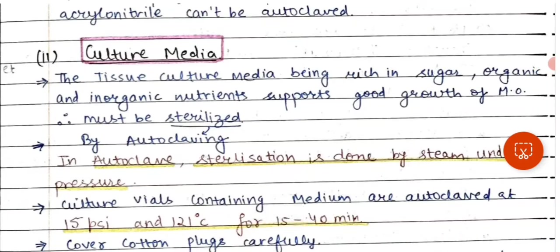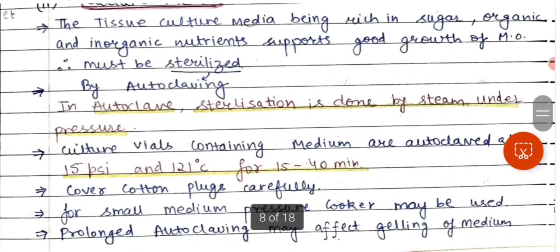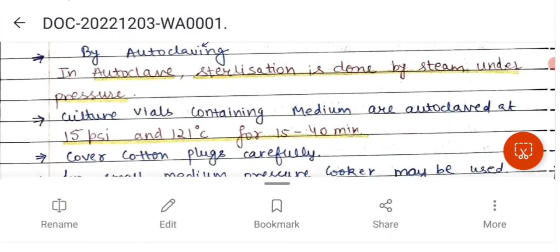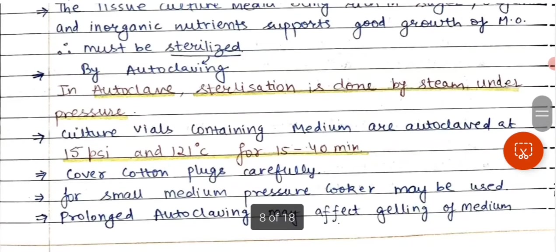Tissue culture media contains sugar, organic acids, inorganic nutrients, and organic nutrients which support the growth of microorganisms, so it is very important to sterilize it. You can sterilize it with the help of an autoclave, which uses moist heat to kill microorganisms. The autoclave is like a pressure cooker in which we place the media at 121 degrees Celsius and 15 psi pressure.